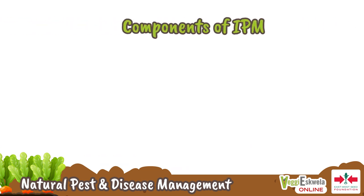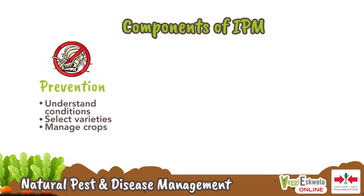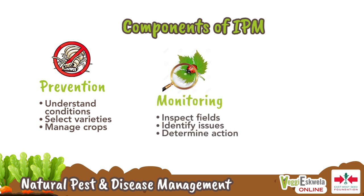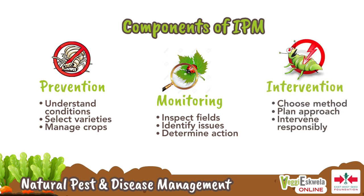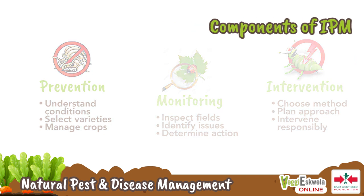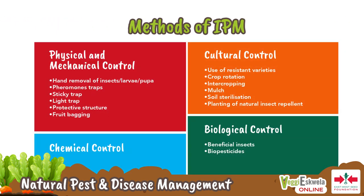The following are the components of IPM: Prevention — preventing the build-up of pests. Monitoring — monitor crops for both pests and natural control mechanisms. Intervention — intervene when control measures are needed. Control programs that can be employed include physical and mechanical control, cultural control, biological control, and chemical control. Today's episode will cover physical and mechanical control, cultural control, and some biological control methods.